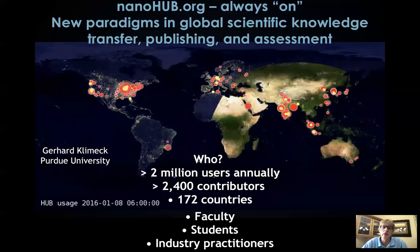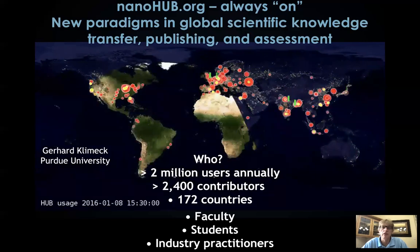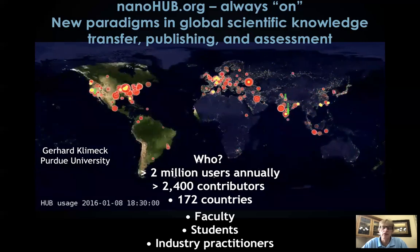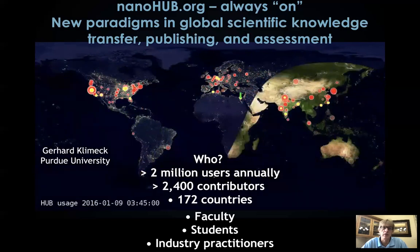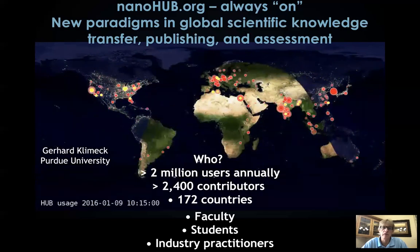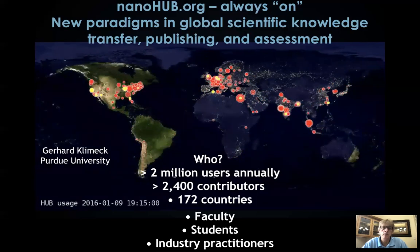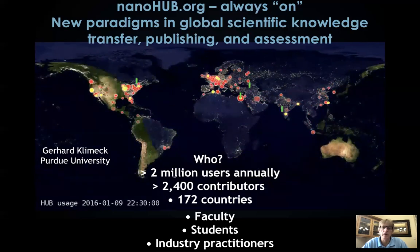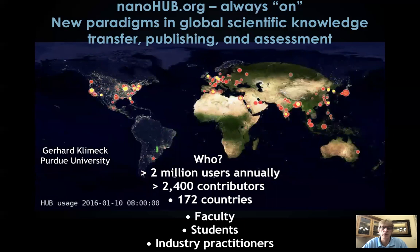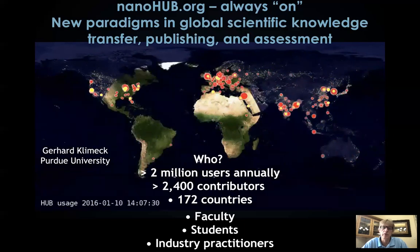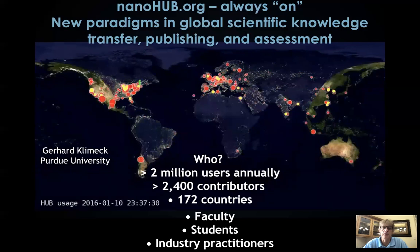So what's NanoHub and who is there? We have about 2 million users annually, and as you see in this animation, it is really never sleeping. We have users there 24-7, 12 months a year. We have over 2,400 contributors and users in 172 countries. These users are typically faculty, students, and industry practitioners.